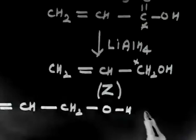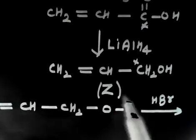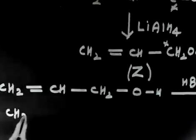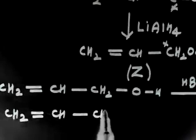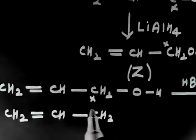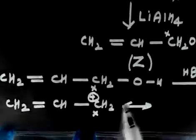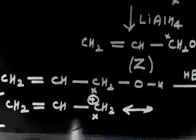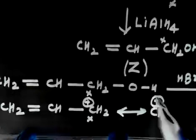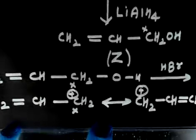If you treat Z with HBr, in the first step it loses H2O and forms a carbocation: CH2=CH–CH2+, where this carbon is radioactive. This carbocation can be resonance-stabilized, so the positive charge can also sit on the other carbon: +CH2–CH=CH2.